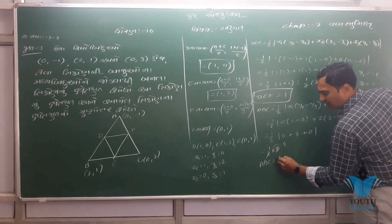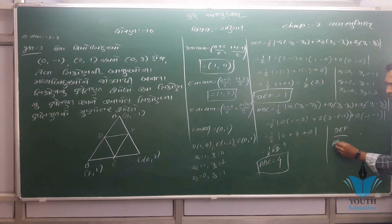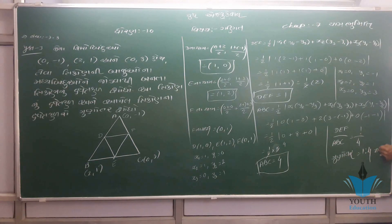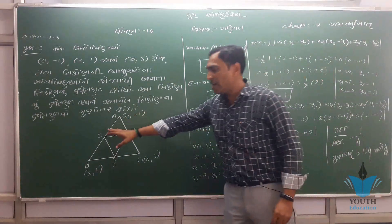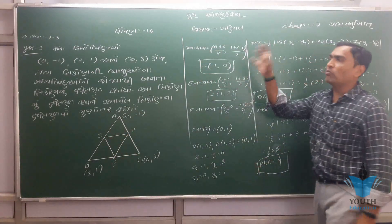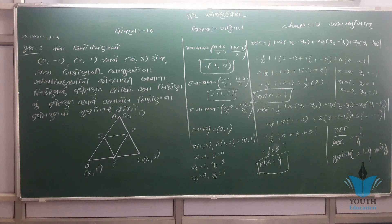4 મળ્ 4. આમ, નાના ત્રિકોણ DEFનું ક્ષેત્રફળ 1 અને મૂળ ત્રિકોણ ABCનું ક્ષેત્રફળ 4. ગુણોત્તર DEF:ABC = 1:4. ત્રિકોણની બાજુઓના મધ્ય બિંદુઓ જોડીને બનેલ ત્રિકોણ અને મૂળ ત્રિકોણ વચ્ચેનો ગુણોત્તર 1:4 મળ્ જે આપણો જવાબ છે.